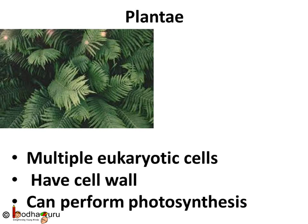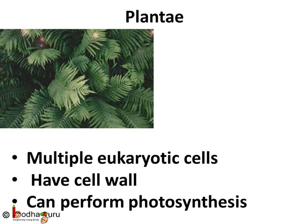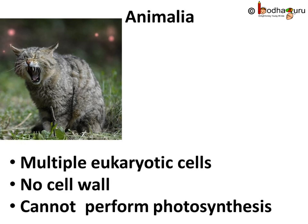Next comes kingdom Plantae. These are multicellular eukaryotes with a cell wall. They can make their own food through photosynthesis. So we can say all green plants that make food fall into this group.